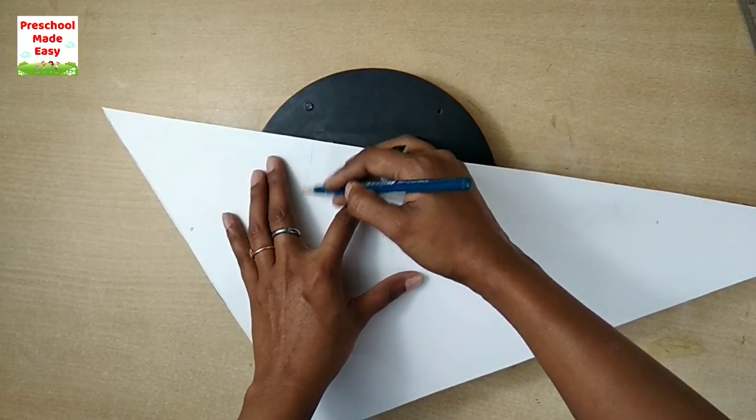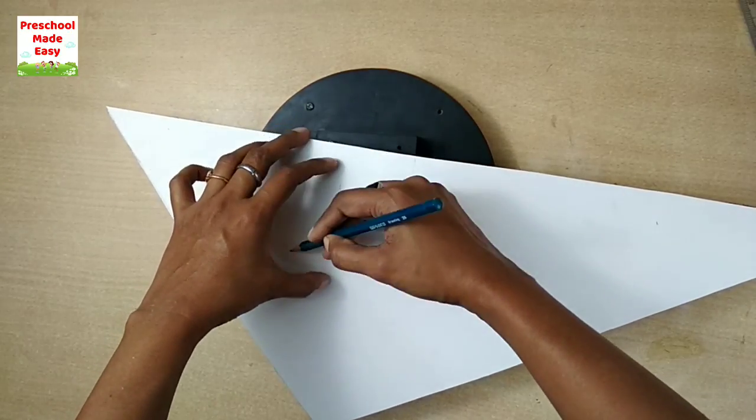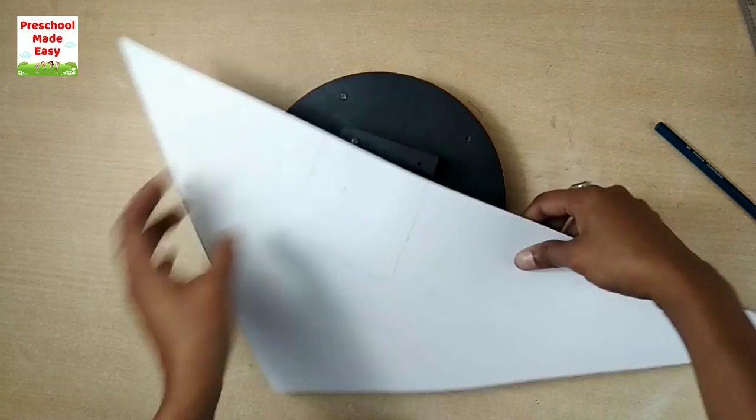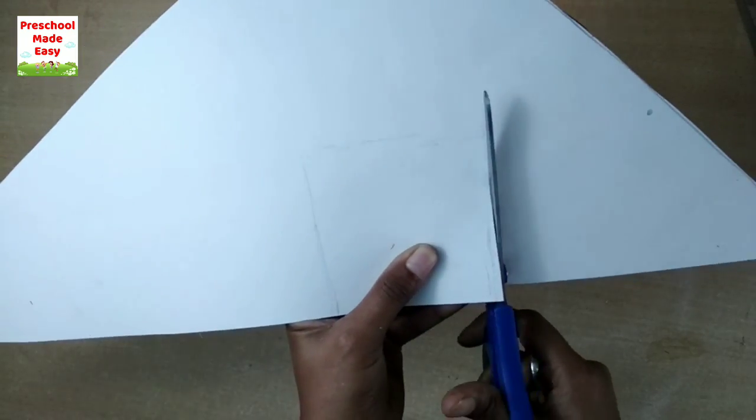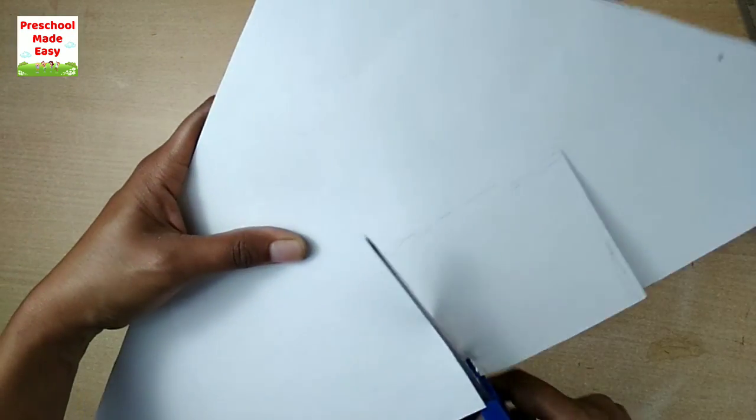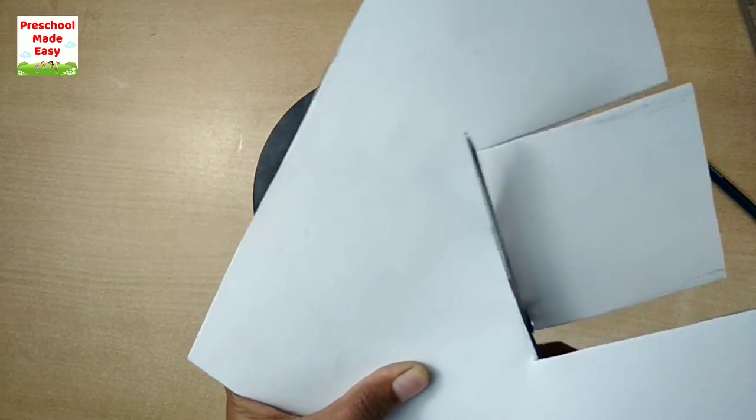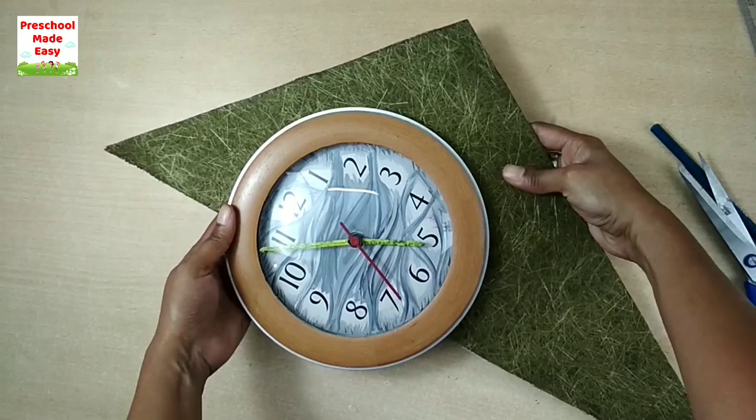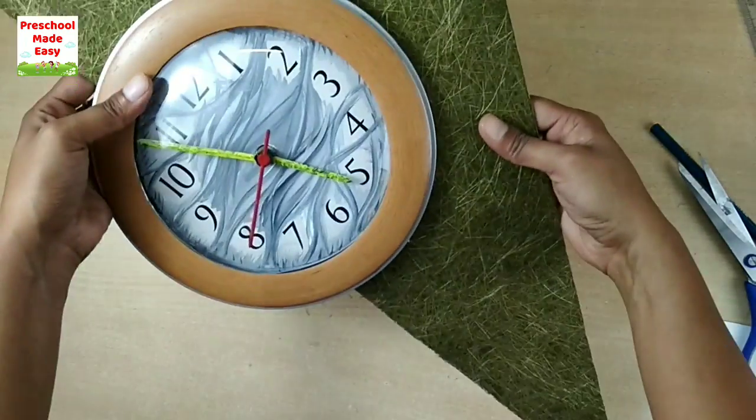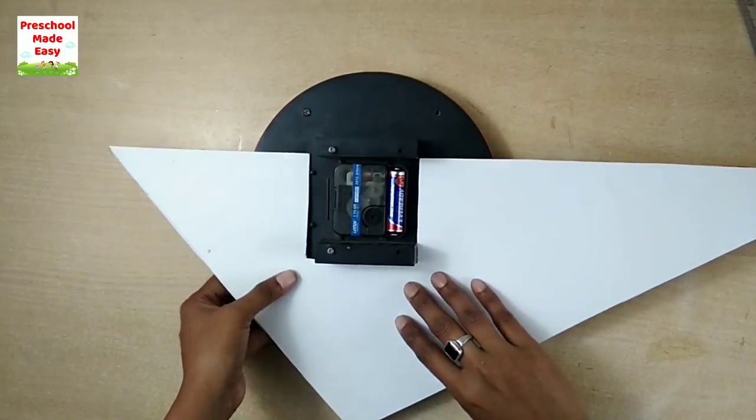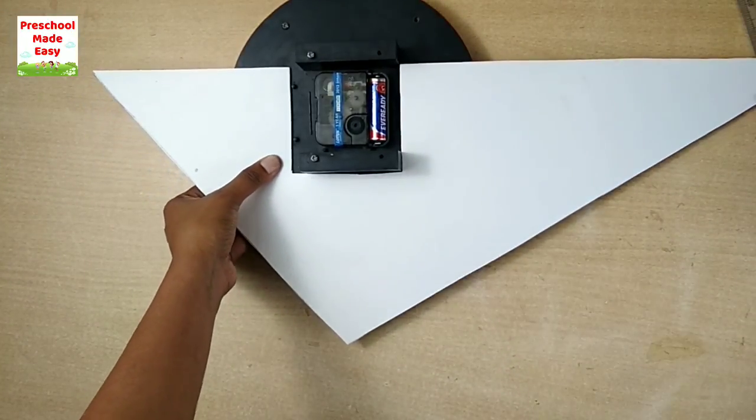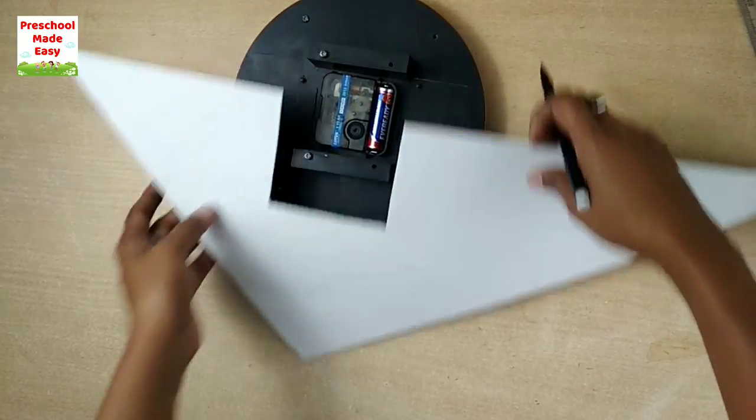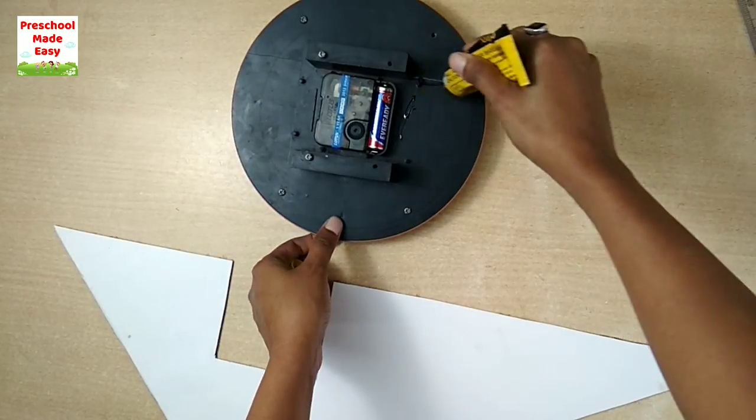I can feel its sides, so I'm marking this so that the paper can fit to this clock. I'm cutting this out. Now it is perfectly fit. I'm applying glue and pasting the paper.